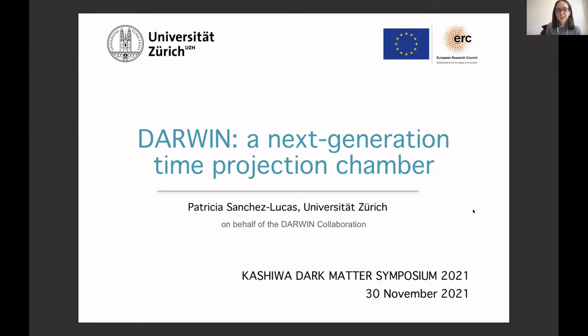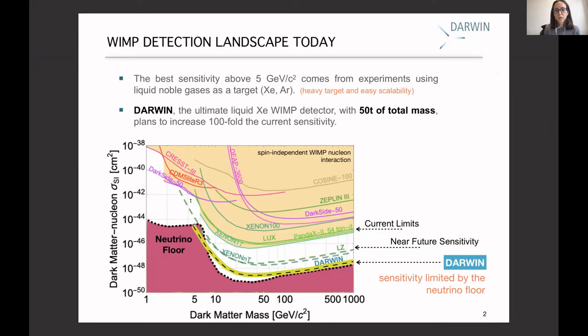Thank you everybody for being here. I'm talking about DARWIN and its time projection chamber, mainly for WIMP searches. I will start with the WIMP exclusion limit plot you have already seen in Teresa's talk, showing the exclusion limit for WIMPs — spin-independent WIMP interaction scattering. You can see the cross section as a function of WIMP mass and all the parameter space already excluded. The best sensitivity for this WIMP search is about 5 GeV, coming from experiments that use liquid noble gases as a target, mainly xenon and argon.